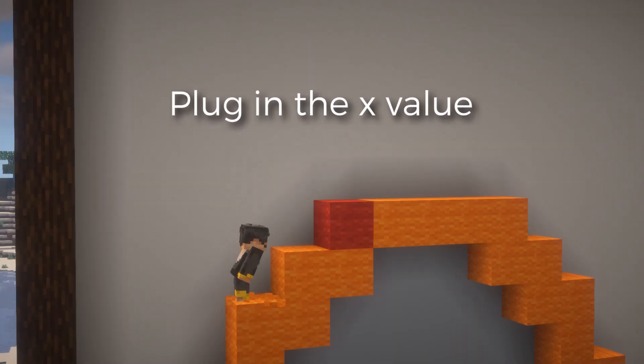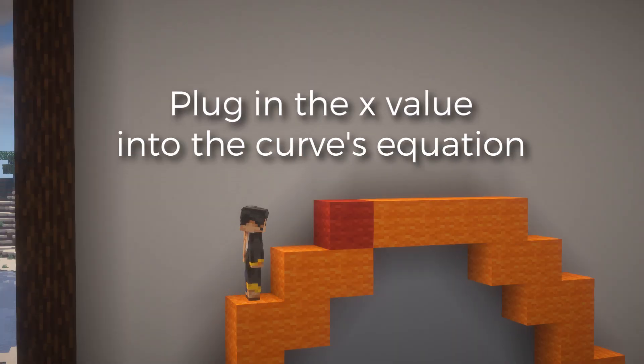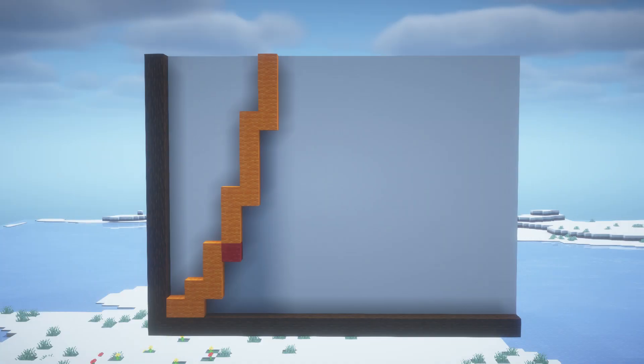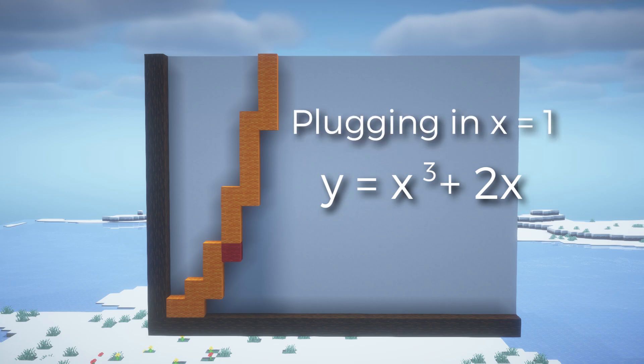So we just have to plug in the x value into the curve's equation, and the result will be the y value of the tangent line. Going back to the equation, we're not using the derivative equation, but going back to the original one. So plug in x equals 1 to x cubed plus 2x. That gives us 1 cubed plus 2 times 1, which equals 3.